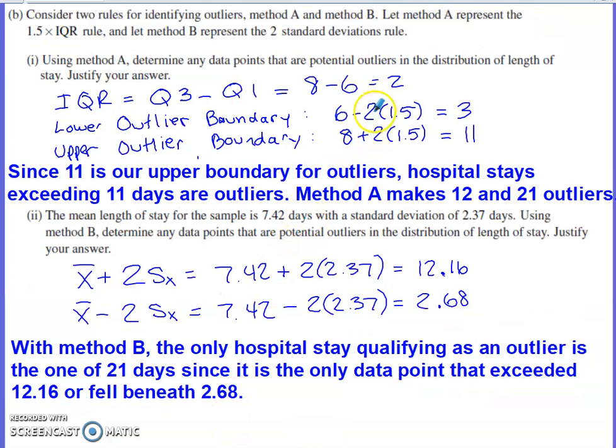So part B asks us to consider two rules for identifying outliers, method A and method B. Method A is going to be 1.5 times the interquartile range rule. Method B is going to be the two standard deviations rule. So for method A, the 1.5 IQR rule, you need to first establish your interquartile range.